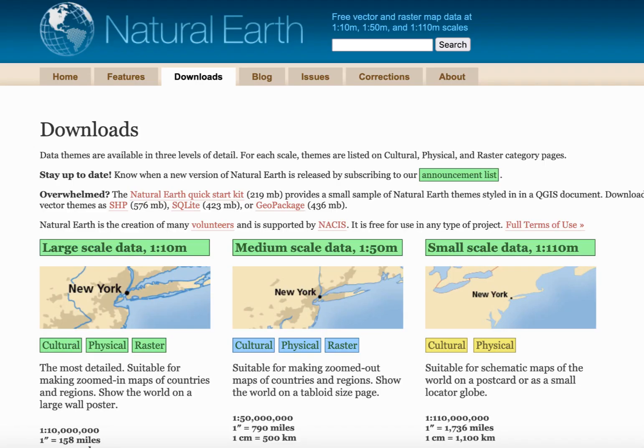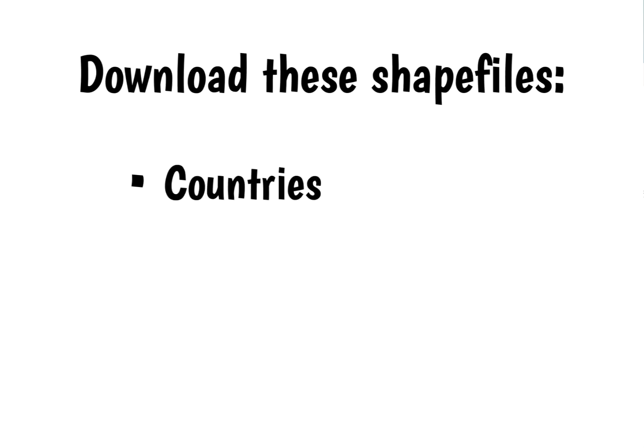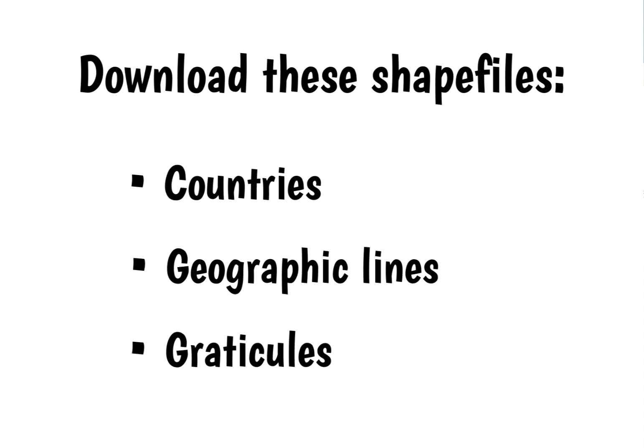We need a good set of vector data for the world, so I'll use data from the Natural Earth website. I'll download three files from the 1 to 10 million cultural and physical vectors pages: Countries, Geographic Lines, and Graticules.